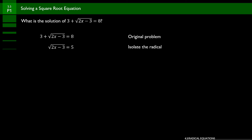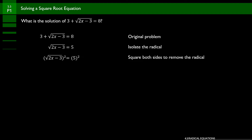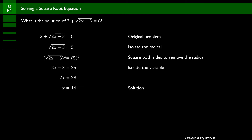Now we need to eliminate the square root. The opposite of the square root is a square, so we square both sides. Once we get rid of the radical, we're left with 2x minus 3 equals 25. Now it's just isolating the variable: add 3 to both sides, giving 2x equals 28, then divide by 2, and x equals 14.